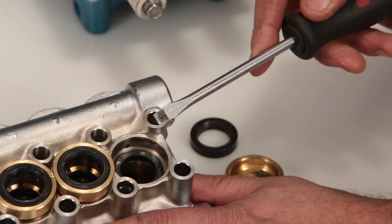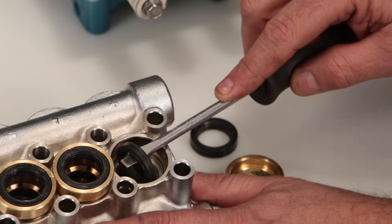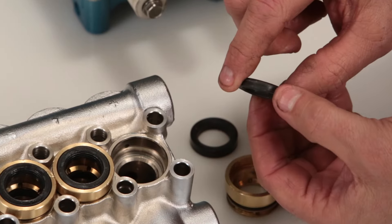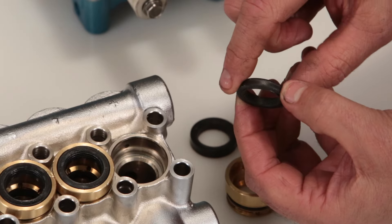Place a flat tip screwdriver under the high pressure seal and pry upward to remove. Ensure you do not score the inside of the manifold. Inspect the inside and outside of high pressure seal for excessive wear or damage.